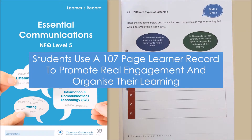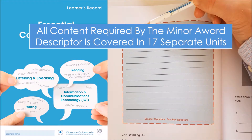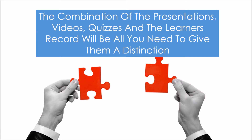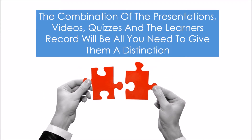Students use a 107-page learner record to promote real engagement and organise their learning. All the content required in the minor award is covered in the 17 separate units. The combination of the presentations, the learner records, the videos, and the quizzes will be all you need to give your students a distinction this year.